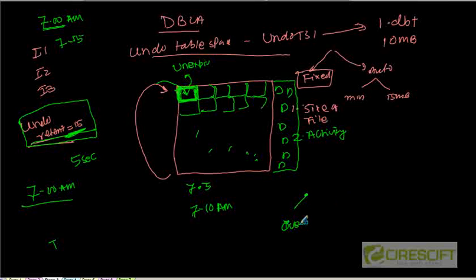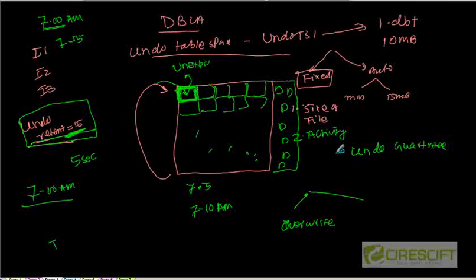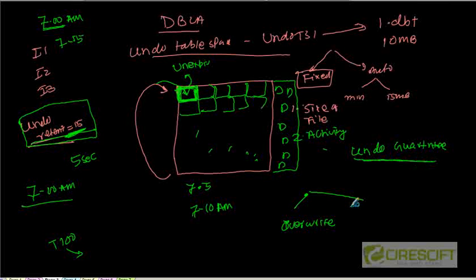We can overwrite, or another thing can happen: if we enable this tablespace using undo guarantee. There is another parameter called undo guarantee. If we say that undo guarantee is enabled, in that case we cannot overwrite. So here is a scenario: transaction T100 is trying to do something — it requires some undo space in the undo segment. But there is no more space and we are not allowed to overwrite because of the undo guarantee parameter. So in that case, this transaction will fail and the error message is sent to the user saying that undo space is not available.